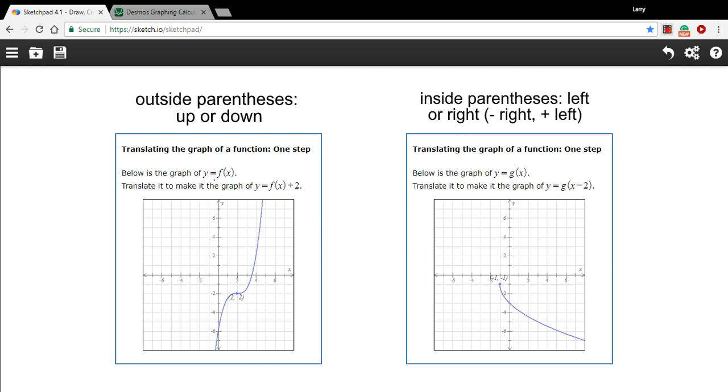In this case, we don't know what the function f(x) is, they're not telling us, but we do know we're going to add 2 to it outside the parentheses, so that just means the whole thing moves up 2 units. So the vertex here, down here at (2, -2) is going to be at (2, 0), and the whole rest of the function will just be replicated 2 units up.